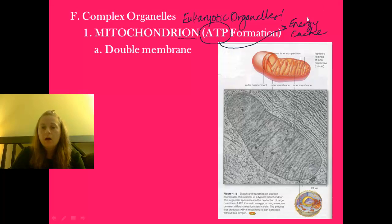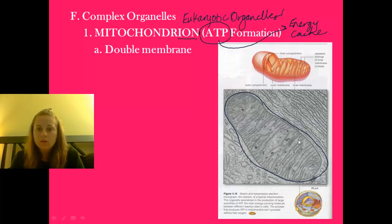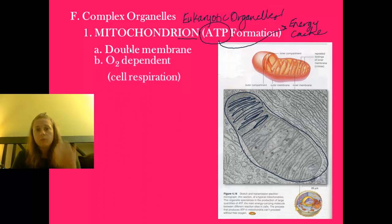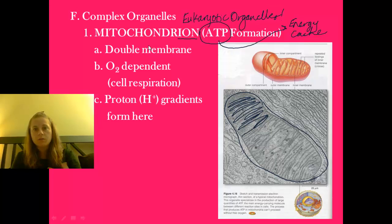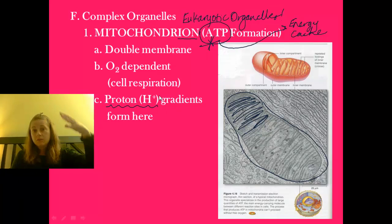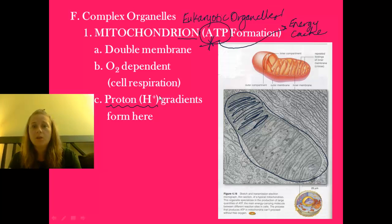The mitochondria is double membraned — it has an outer layer and all of these double membrane-bound folds through the inside, which you can see in a transmission electron micrograph. It is primarily responsible for cellular respiration. It's oxygen dependent — it won't work to build up ATP without oxygen. The gradients of hydrogen ions form here, and the driving force behind ATP formation is these gradients — differences on one side of the membrane to the other. We'll come back to this in complete detail next unit.